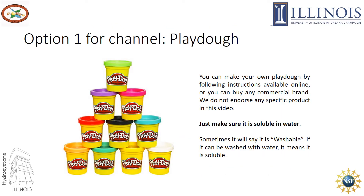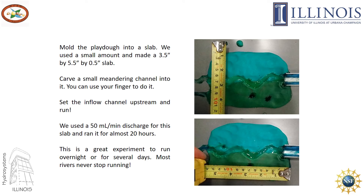The first option for the soluble slab is Play-Doh. You can make your own Play-Doh by following instructions available online, or you can buy any commercial brand. We do not endorse any specific product in this video, but we show the brand we used for our tests. Just make sure that it's soluble in water — sometimes it will say it is washable, and if it can be washed with water, it means it is soluble. To make the slab, mold the Play-Doh. We used a small amount and made a 3.5 by 5.5 by half-inch slab.